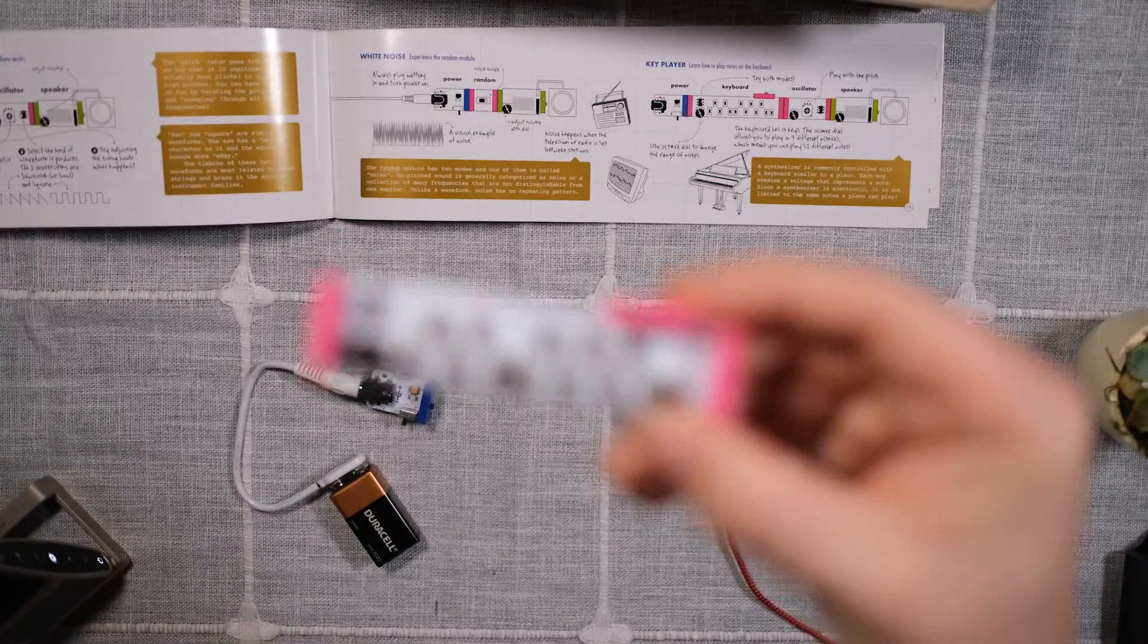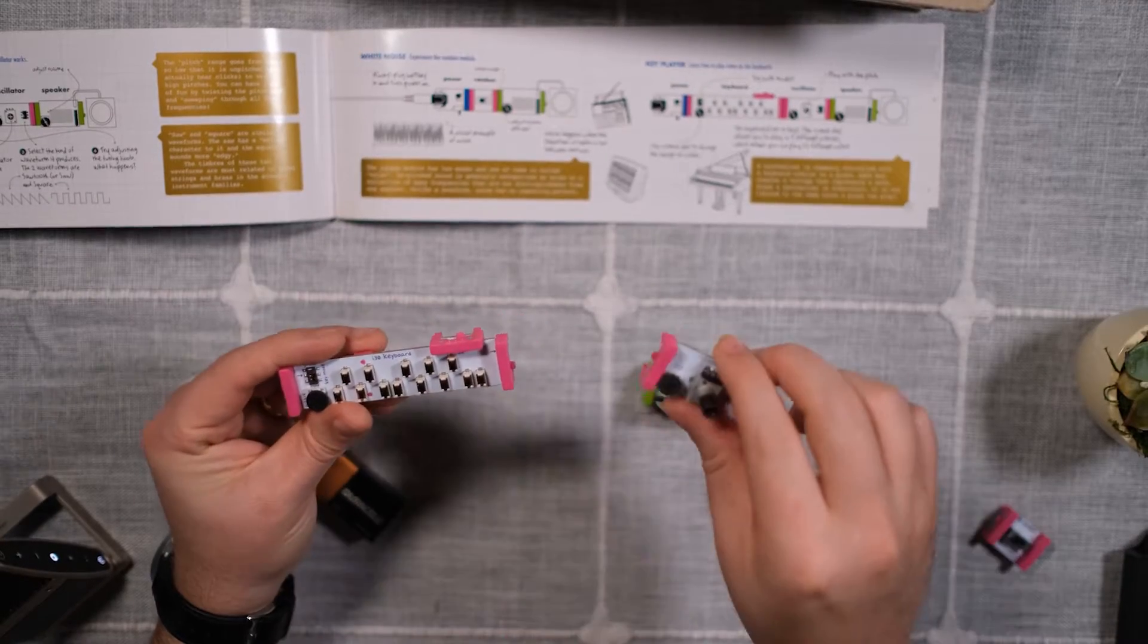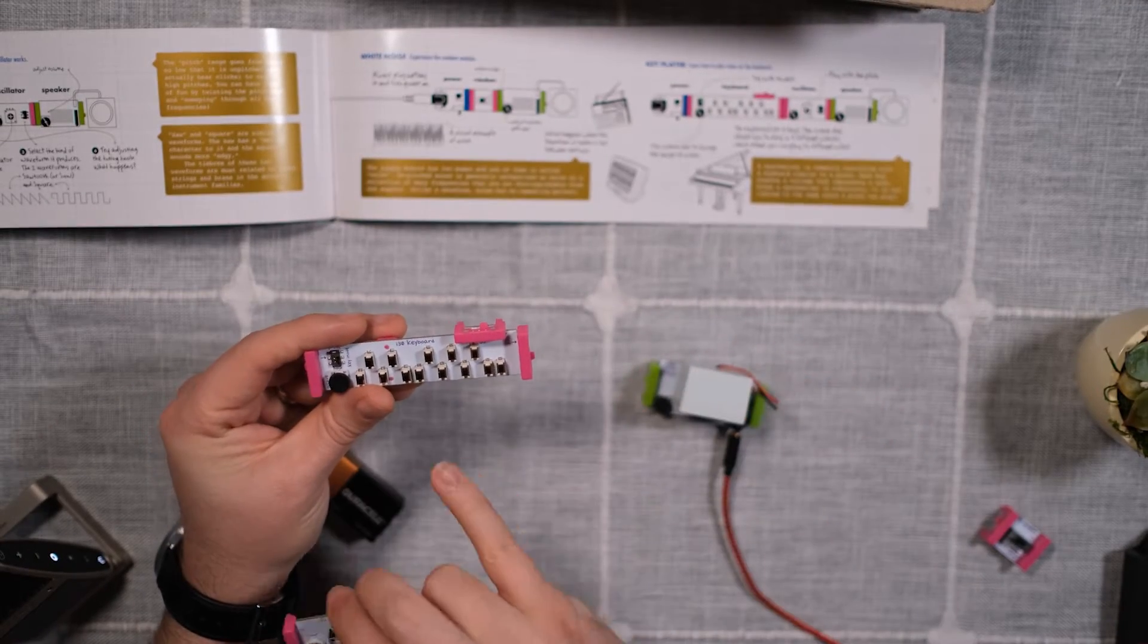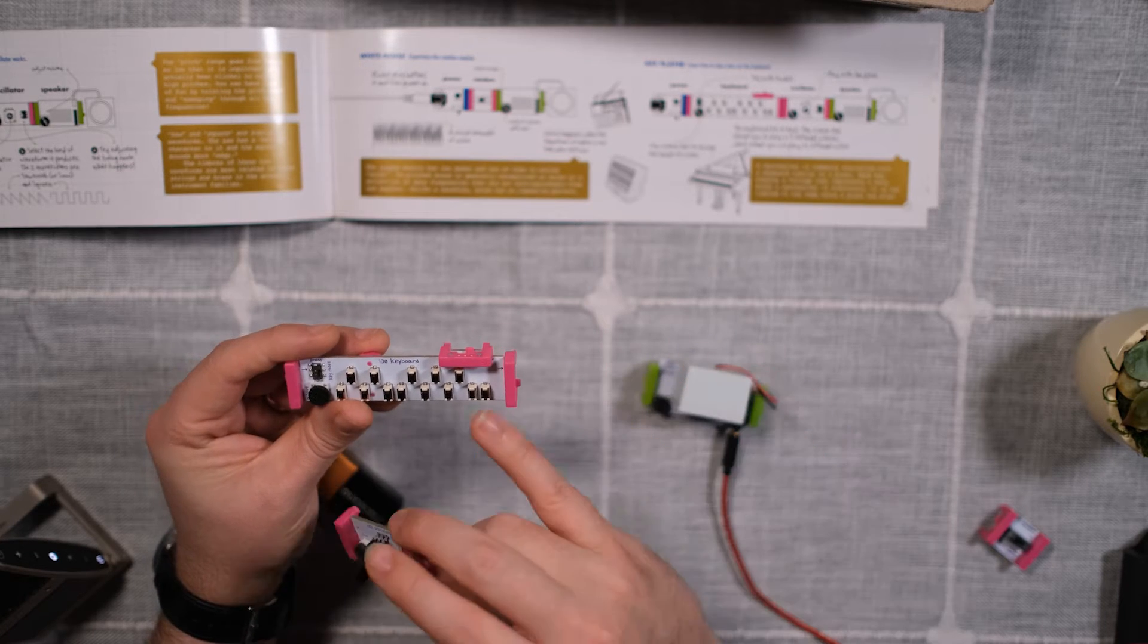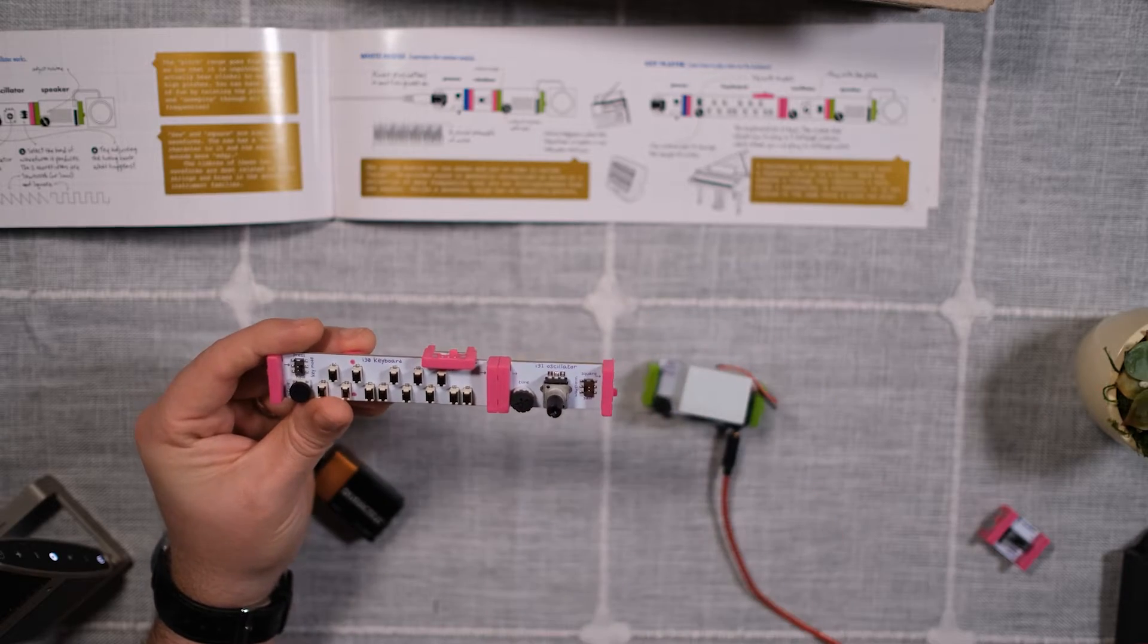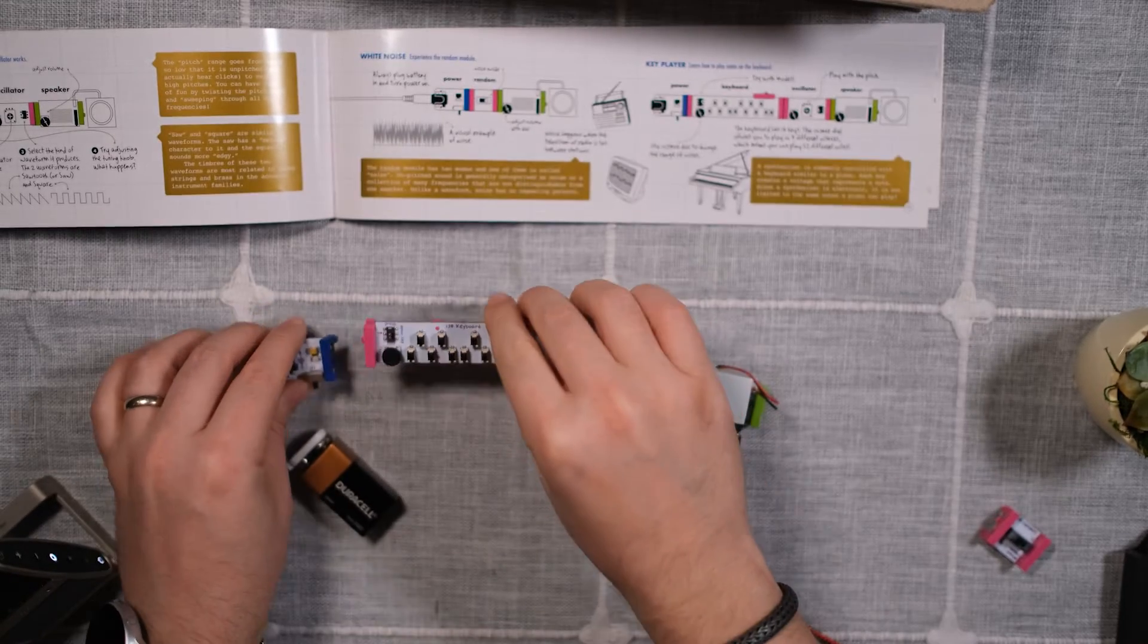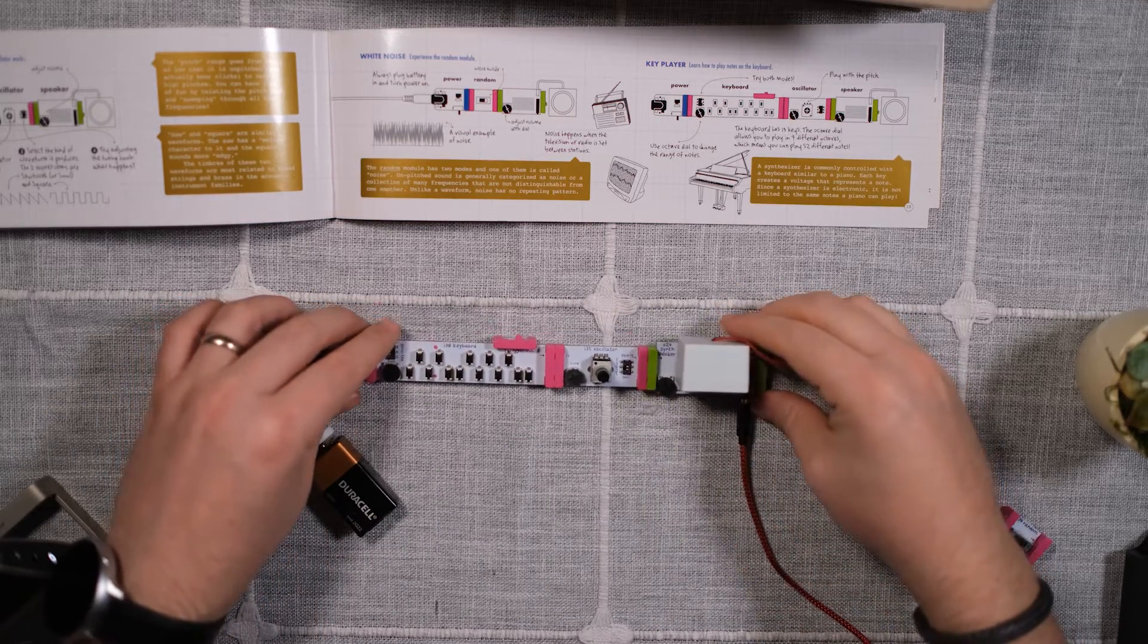Next, we can attach the keyboard. Now the keyboard is going to affect the oscillator. So we need the keyboard to send the signal to the oscillator. So it has to be before the oscillator in the chain. So let's put these together. Obviously, power always has to be first, and then we add the speaker.